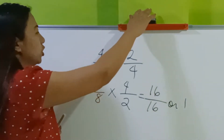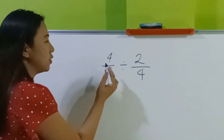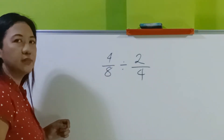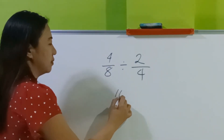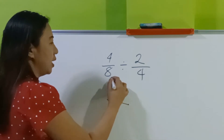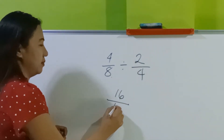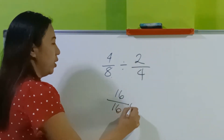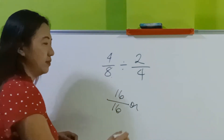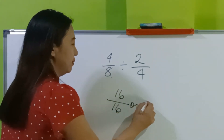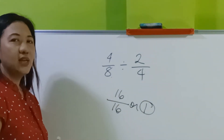Now let's do the shortcut. 4 times 4 is 16, 8 times 2 is 16, which equals 1. Same answer? Yes.